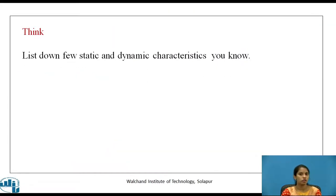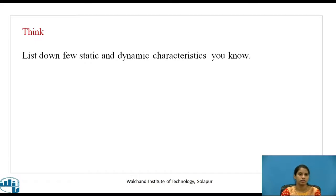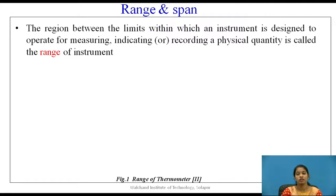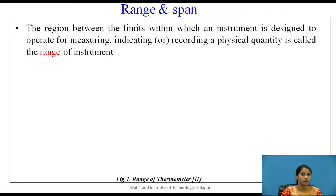Now let us see what are static characteristics. First one: Range and Span. Range is the region between the limits within which an instrument is designed to operate — to measure, indicate, or record a physical quantity. If you take an instrument to measure some quantity, it will have an upper and lower limit. The region between the upper and lower limit is known as the range of that particular instrument.